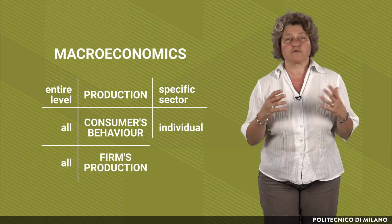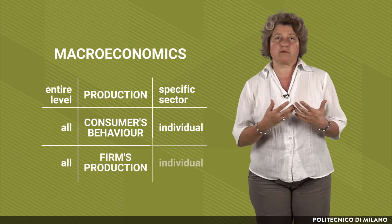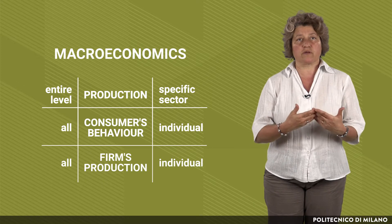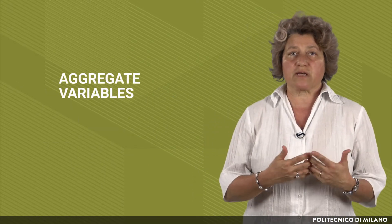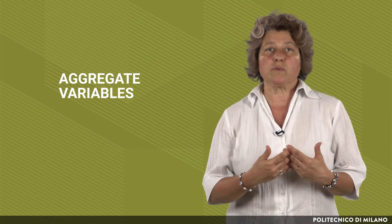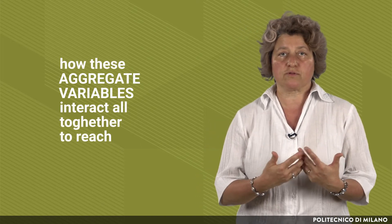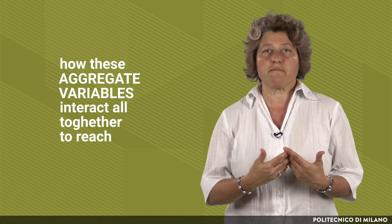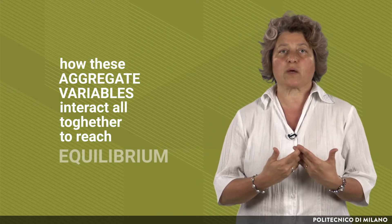How much firms produce all together, rather than considering individual choices by an individual firm. We look at aggregate variables and consider how these variables interact all together to reach something which is considered to be an equilibrium.